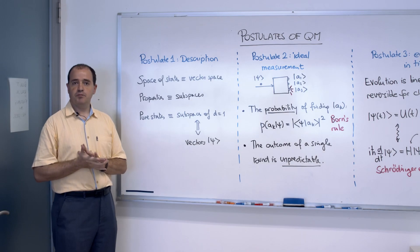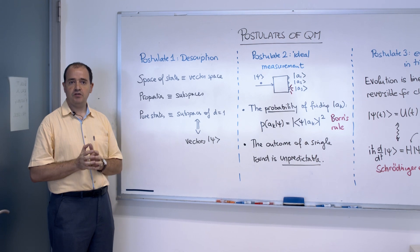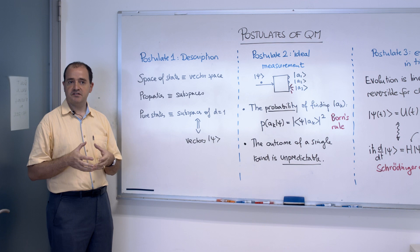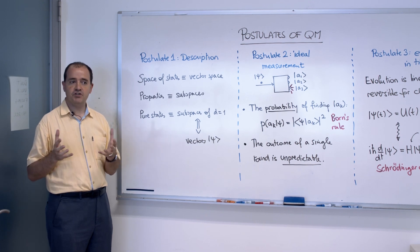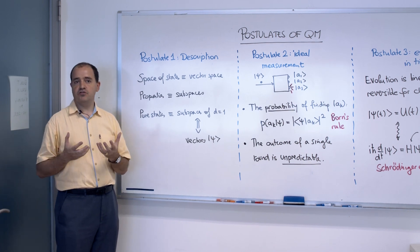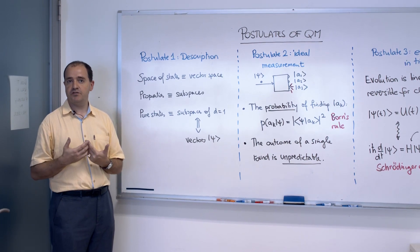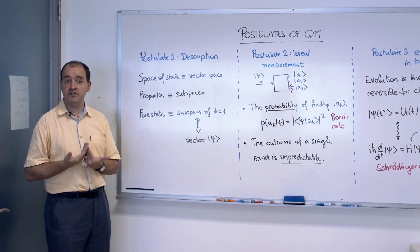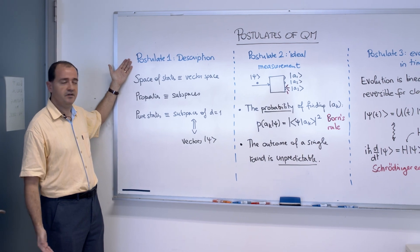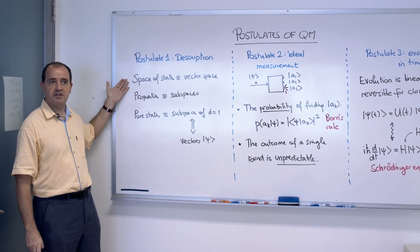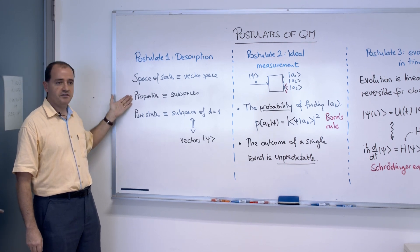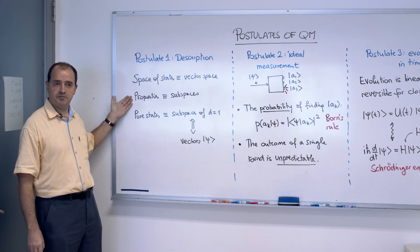In this chapter, we also discuss the postulates of quantum mechanics, which means how the mathematical objects of linear algebra are used to describe physical systems. This is the most important piece of translation that you have to learn. And there's no consensus about how to list the postulates. In this course, I've chosen to list them under three headers. The first postulate is about description of the physical system. We've already seen something. We've already seen that the space of states is going to be a vector space. The properties of the physical system will be described by subspaces.